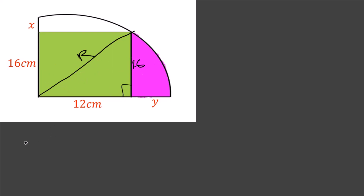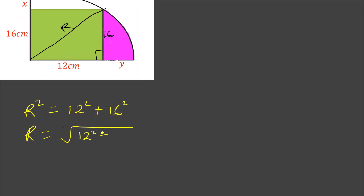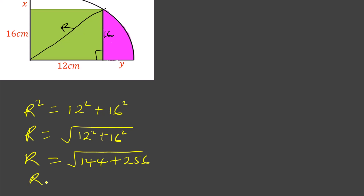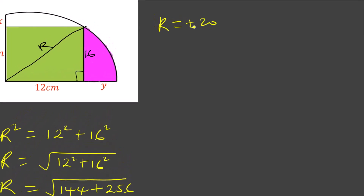We can apply the Pythagorean theorem here. The square of the longest side — that is r squared — equals the sum of the squares of the other two sides. So r squared equals 12 squared plus 16 squared. That is 144 plus 256, which equals 400. Therefore, r equals the square root of 400.